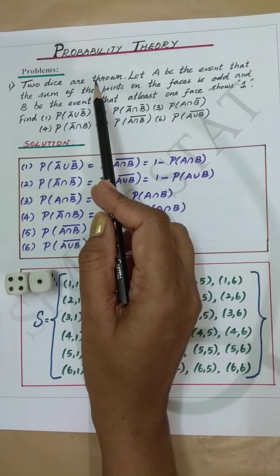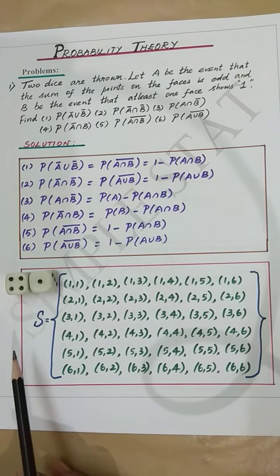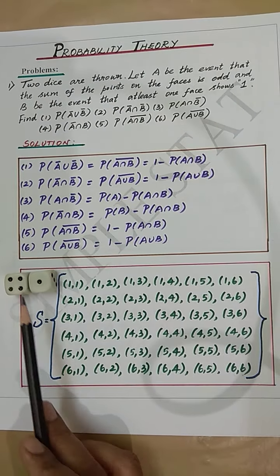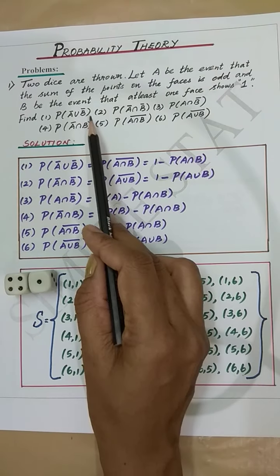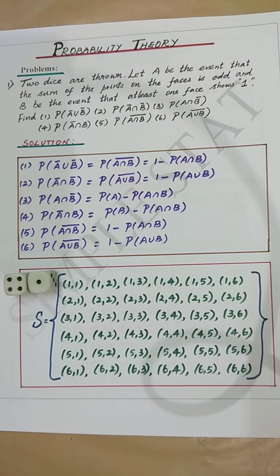Let's discuss a problem in probability theory. Two dice are thrown — that is the random experiment. Let A be the event that the sum of the points on the faces is odd, and B be the event that at least one face shows one. We have to find these probabilities.